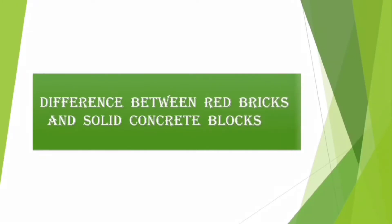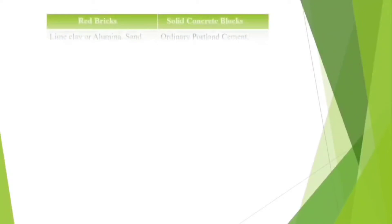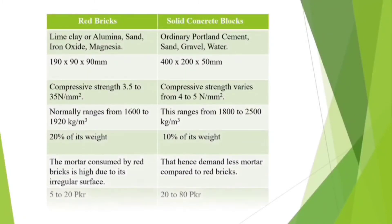Welcome to our channel. Today our topic is about the difference between red bricks and solid concrete blocks. If we talk about the manufacturing, red bricks are made of lime, clay, sand, iron oxide and magnesia. On the other side, solid concrete blocks are made from ordinary Portland cement.